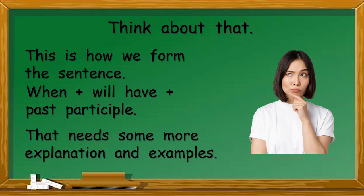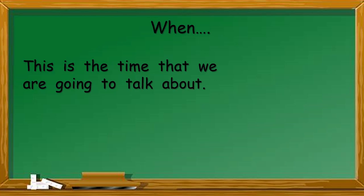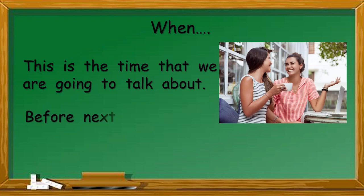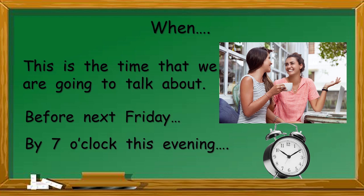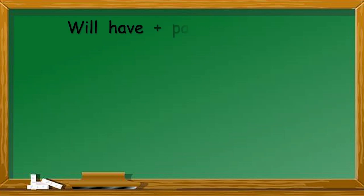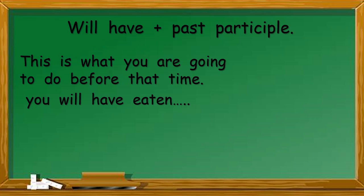This is probably the most difficult bit of grammar we will look at, so don't worry. That needs some more explanation and examples — don't forget, it's the future perfect. The time we are going to talk about could be: before next Friday, or by 7 o'clock this evening. What do we need to add? We'll have and the past participle. So: you will have eaten. Eaten is the past participle — sometimes we call it verb number three.